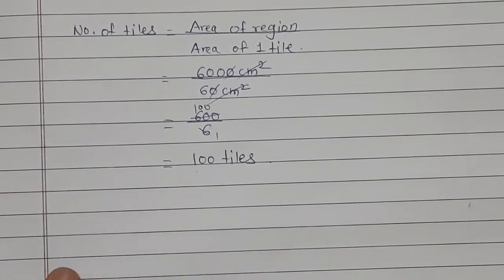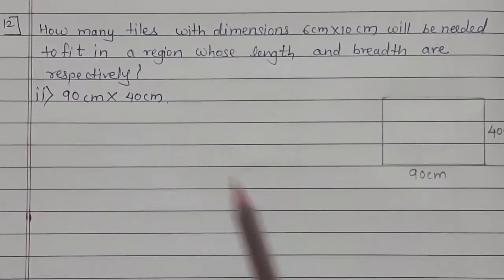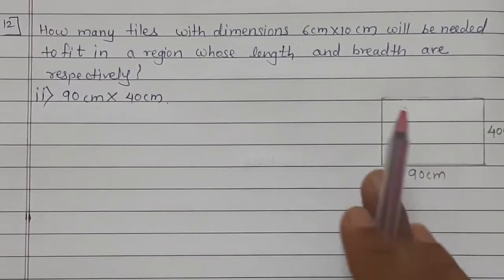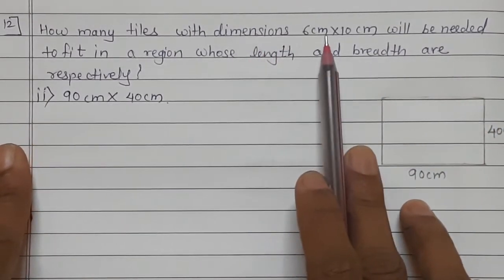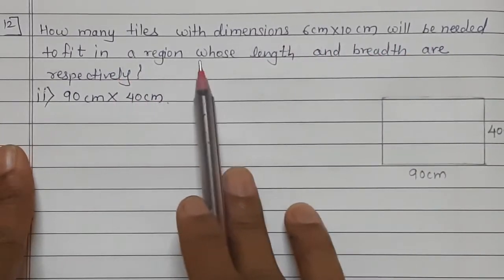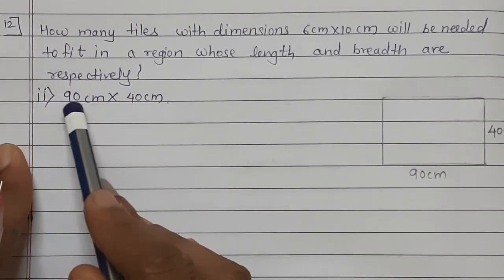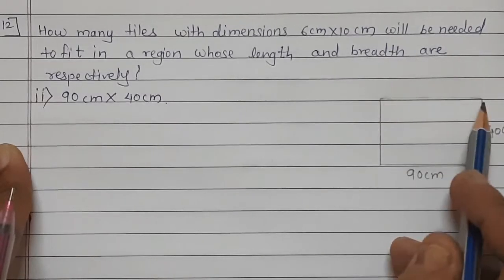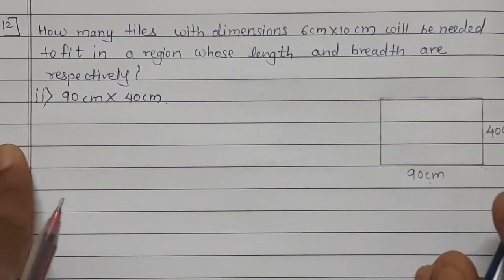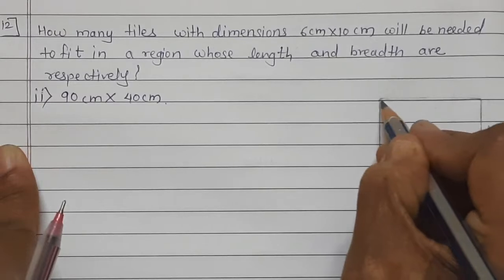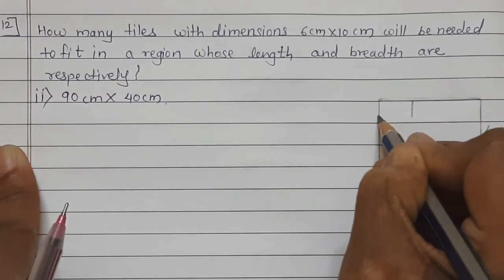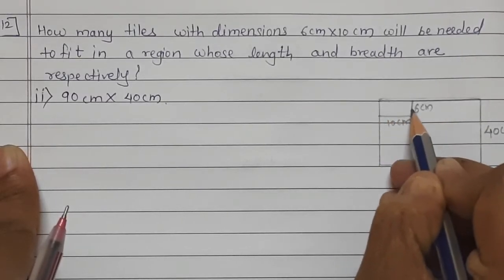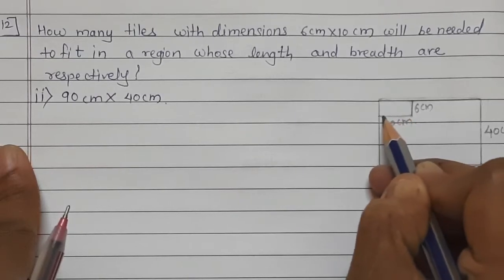So 100 tiles will be needed to fit in the region. Now let's solve the second example from question number 12. The second example is also the same type as the first. How many tiles with dimensions 6 cm by 10 cm will be needed to fit in a region whose length and breadth are respectively: length is 90 cm and breadth is 40 cm.